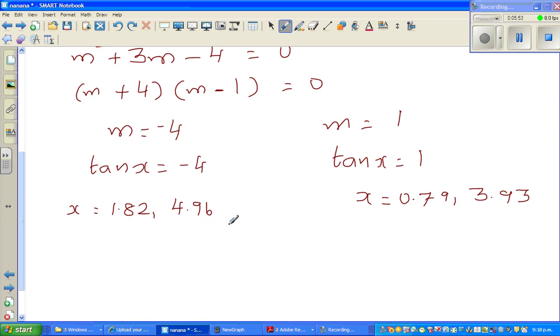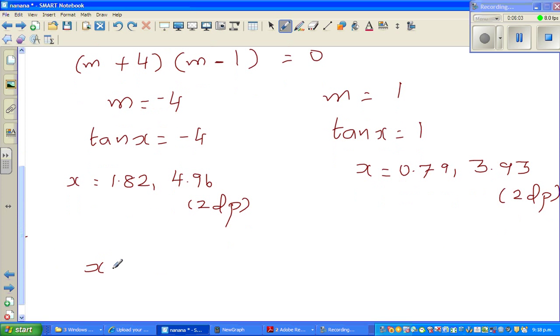All of them are in 2dp. So this is in two decimal places. This is also in two decimal places. So you've got four answers. So let's write all the answers in an order. So this is 0.79, 1.82, then you've got 3.93, and finally, you've got 4.96. You've got four answers. And all of them are in 2dp. See you in the next video.